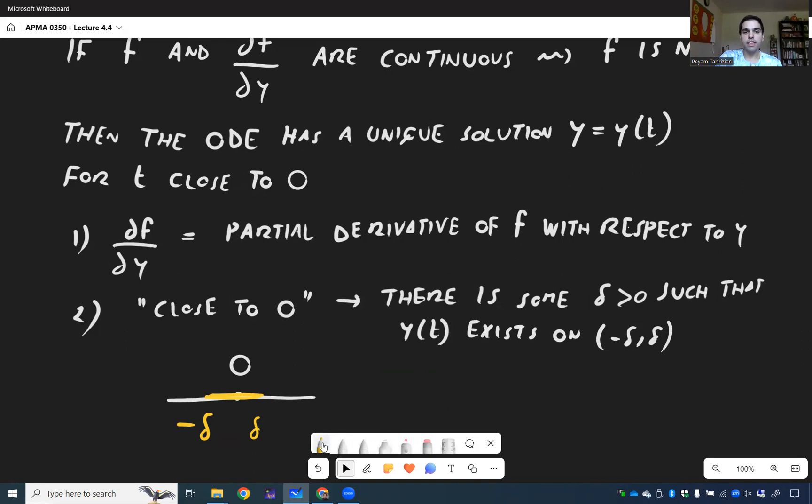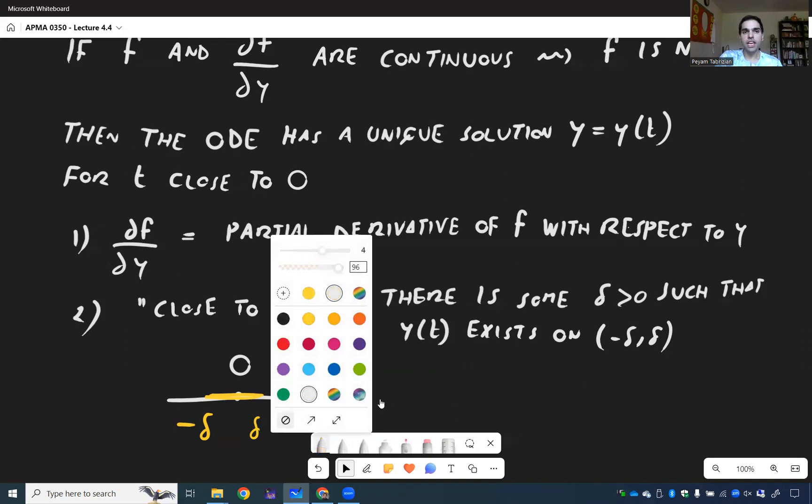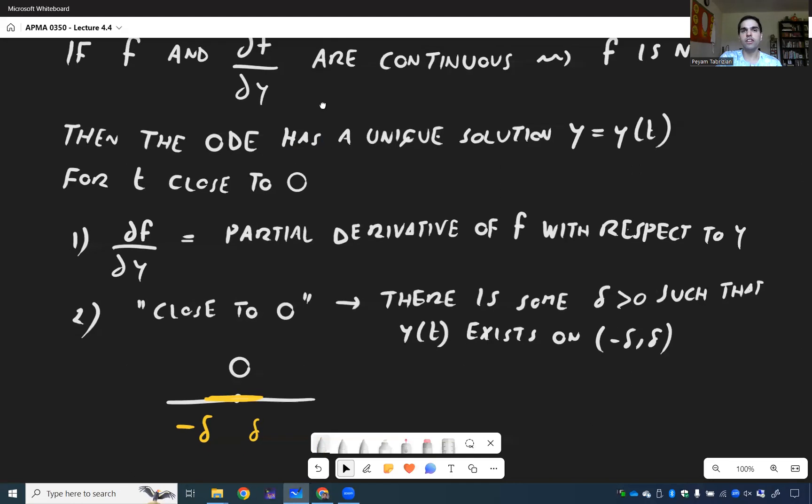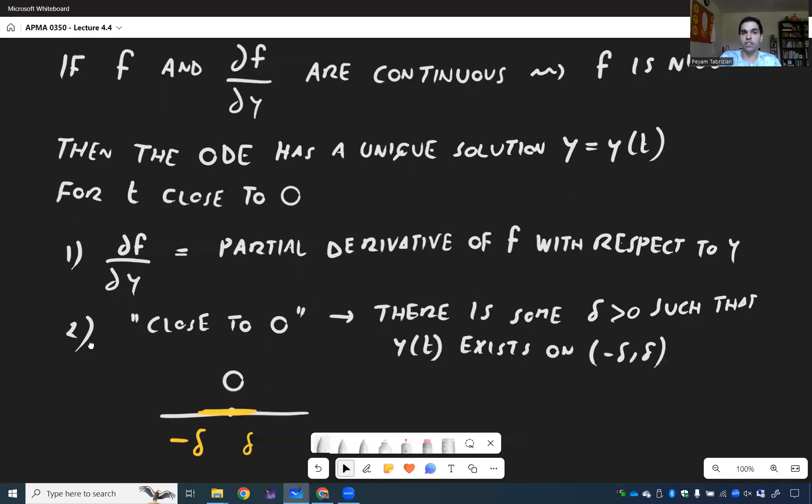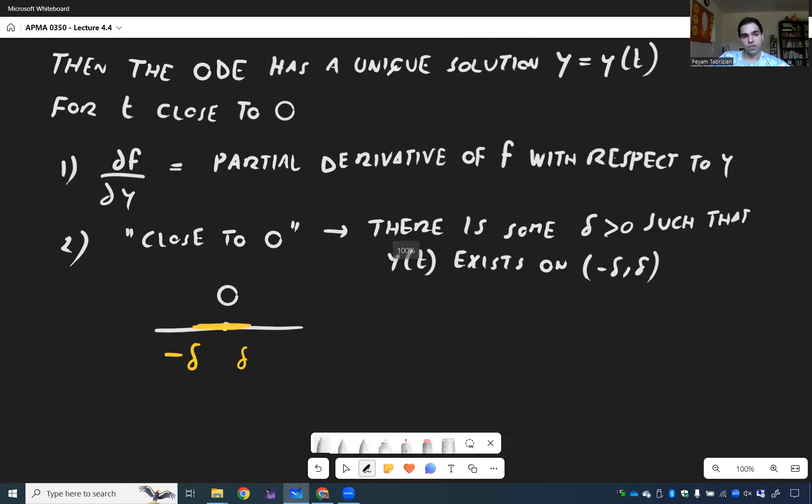And just a couple of things. So here we assume f and the partial derivative are continuous. Well, this theorem is actually just a local theorem. So it's enough to be continuous near the initial condition. That's fine. And you can even replace it with what's called Lipschitz, which is beyond the scope of this course. Last but not least, there's nothing special about zero being the initial condition. This is actually true for any initial time. You just translate your solution.